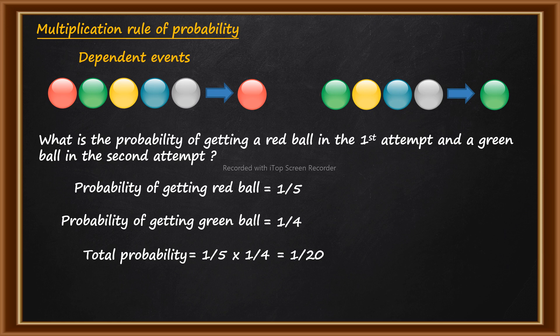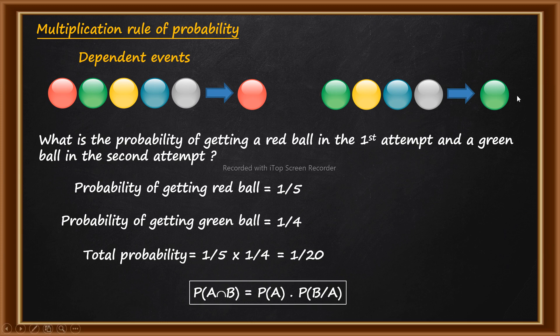The general formula for dependent events is: probability of A intersection B is equal to probability of A into probability of B given A. The second term means the probability of event B when event A has already occurred. Note: if the problem mentions that after getting the red ball you return it to the container before the second attempt, it would be an independent event, since again there would be five balls. Look for phrases about replacement or returning — that means events are independent.